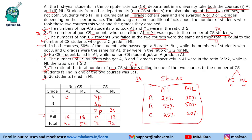In ML, the ratio was 4:5:2. Since the number of CS students who got C grade in ML is 2B, and B equals 6, that is 12, meaning 2 parts equals 36 — wait, 2 parts is 36, so 1 part is 18. Multiplying these numbers by 18 gives 72, 90, and 36. Adding these with the failed students we get total values of 162, 198, and 210, so the total is 210 and A equals 30.